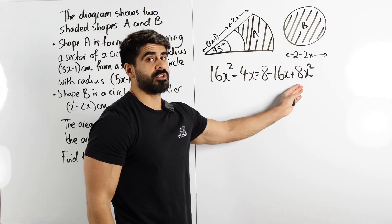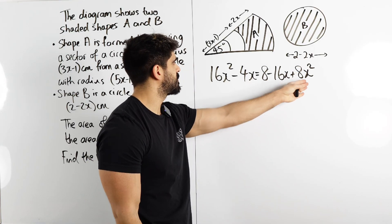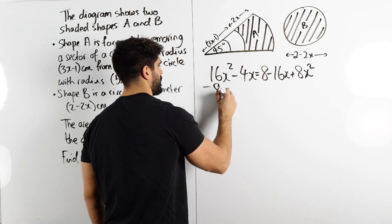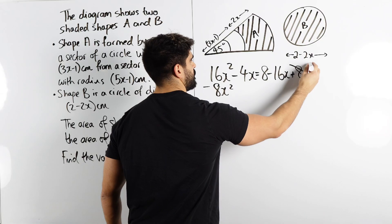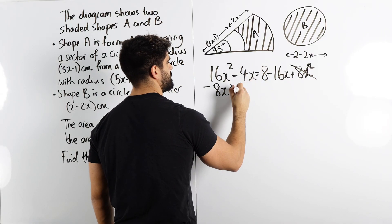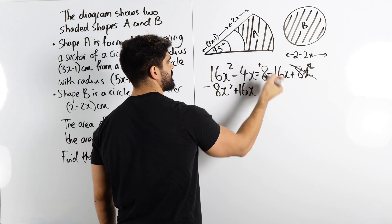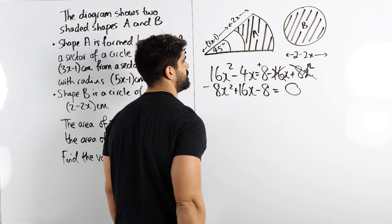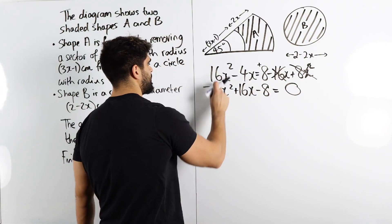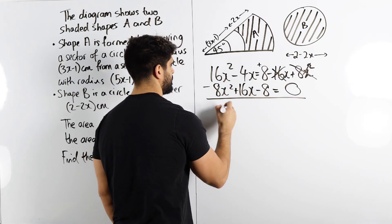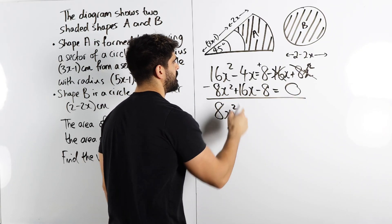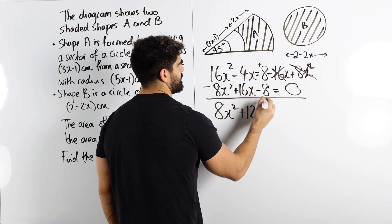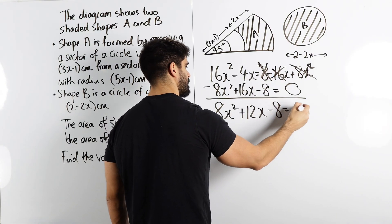Next we bring all terms to one side. The positive 8x squared moves over as minus 8x squared. The minus 16x becomes plus 16x. The positive 8 becomes minus 8, and everything equals 0. Combining: 16x squared minus 8x squared is 8x squared. Minus 4x plus 16x is 12x. And we have minus 8 equals 0.